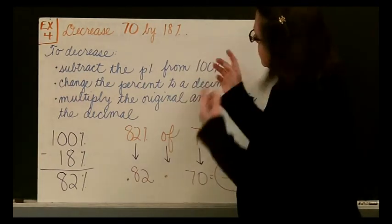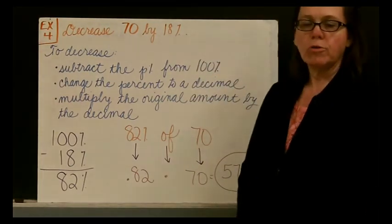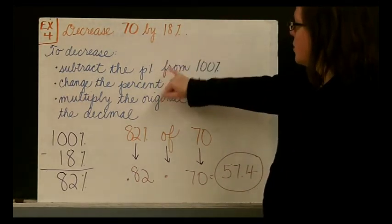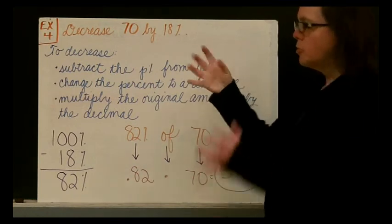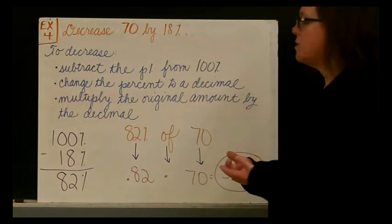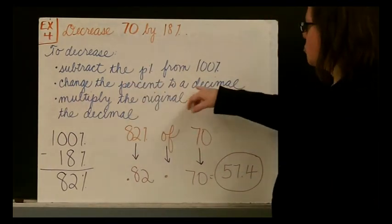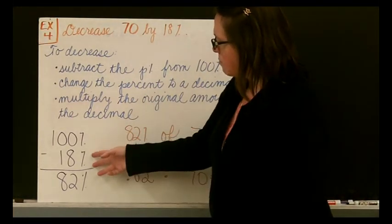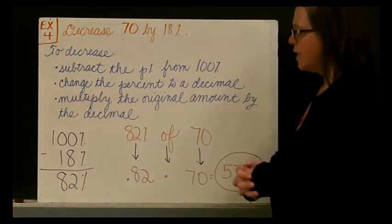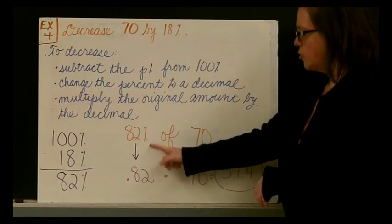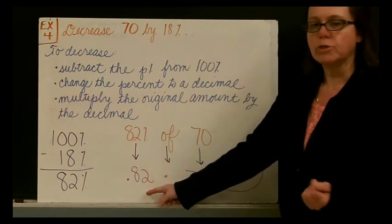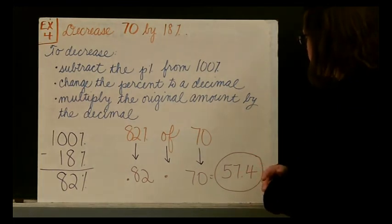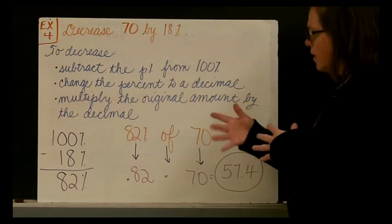In our fourth and final example, as I said, we're going to decrease. Now the only step from this example to our previous one that is different is the first one. Here what we're going to do is subtract our percent of change from 100 because we are making the number small, and we want a smaller piece of it. Then everything else is the same. We change the percent to a decimal. We multiply the original amount by that decimal. And I worked it out here. 100% minus our percent of change leaves us to 82%. And we take our 82% divided by 100 so that we have our decimal equivalent, 0.82. So 0.82 times our original amount, 70, leaves us with 57.4.